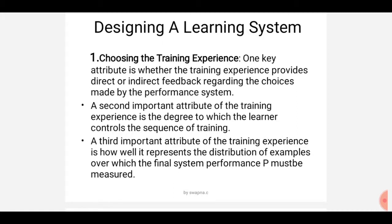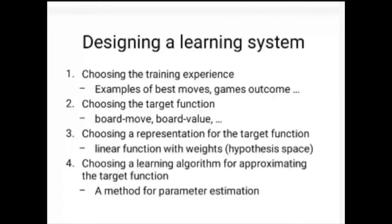So this is the first step. First attribute is taking direct or indirect feedbacks and training. Second attribute is the learner controls the sequence of training with some guidance. Third important attribute is the learner learns in various types of situations, various types of feedbacks, and various types of training experiences — then only you will ultimately reach your goal. This is the first step; the second step we are going to continue in the next class. Thank you very much, students.